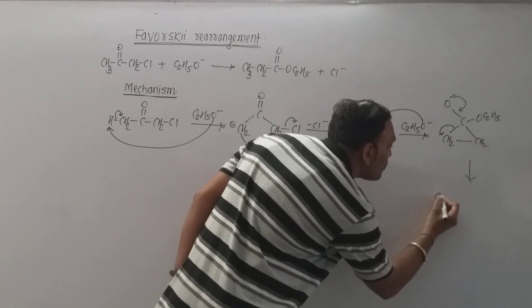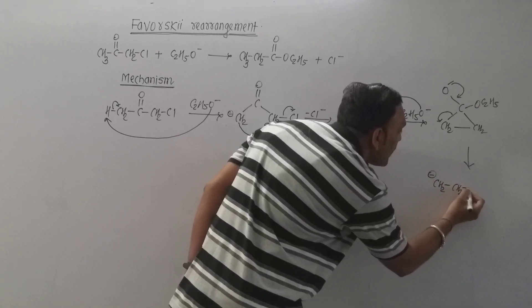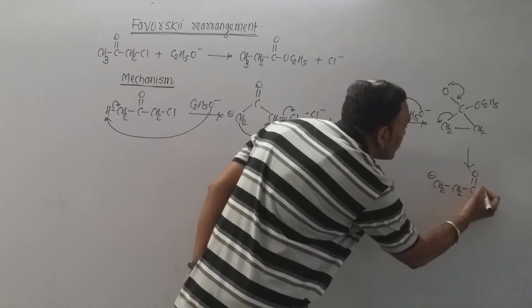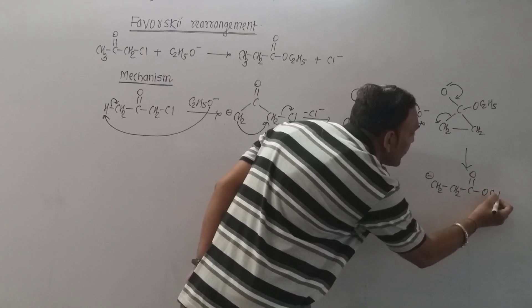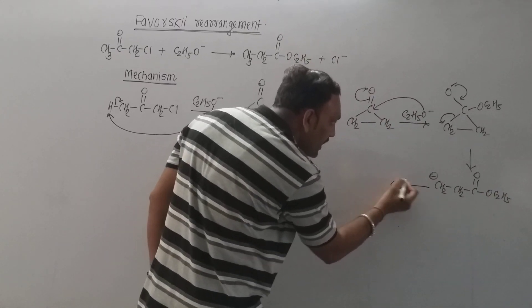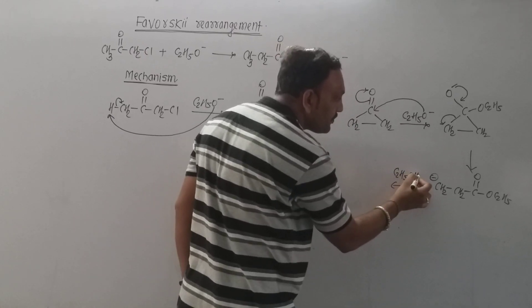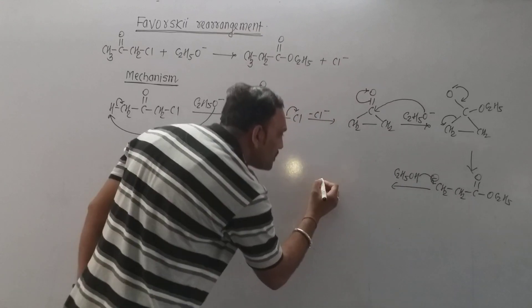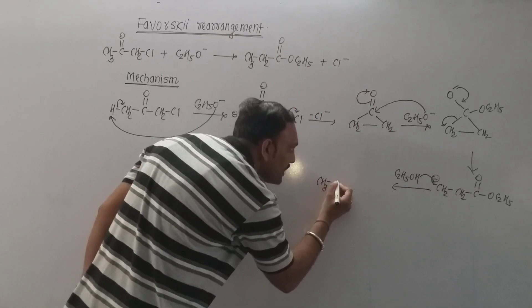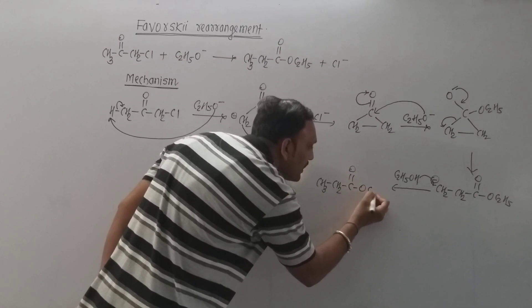This leads to the formation of the carbanionic species that can be represented as shown. This species tends to gain proton from the alcohol, and on account of which the rearranged ester is obtained.